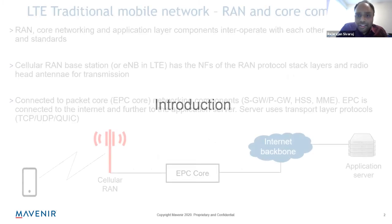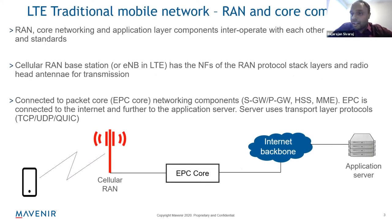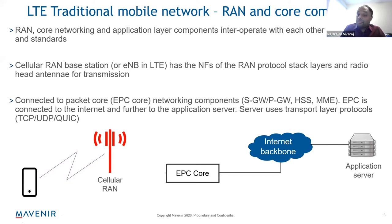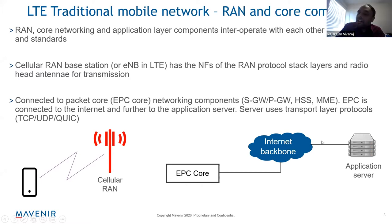In a traditional LTE mobile network, you basically have a cellular radio access component, a packet core component, and an internet backbone connected to an application server. Traditional cellular networks operate on the principles of protocol and standards — not on the principles of data and intelligence. Everything is defined by protocol and standards. The RAN component and the packet core component interoperate, and the user is connected to an IP server through the RAN and the core.